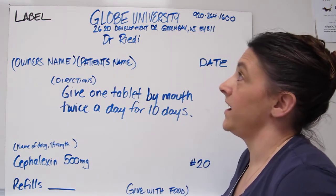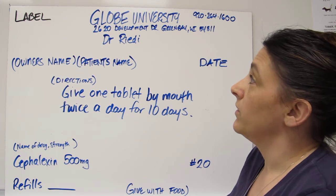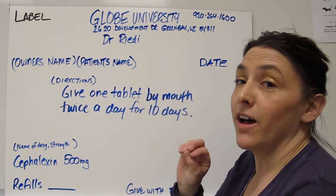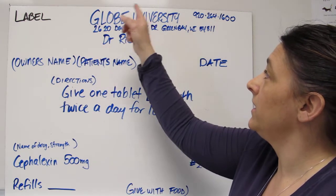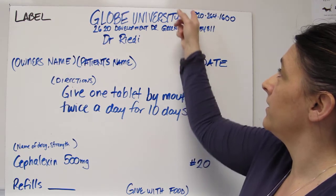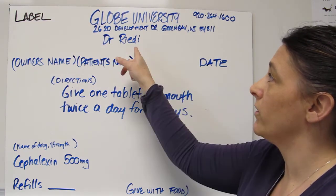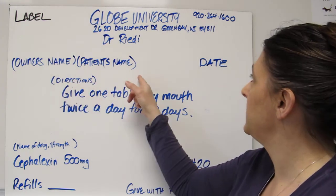Now let's say you're going to make that prescription label in the clinic. So here's our label. This is what's going to be on the container that you send with the client. It needs to have the name of the clinic, the address, the phone number, the name of the doctor dispensing or scripting out the medication, owner's name, patient's name, a date.